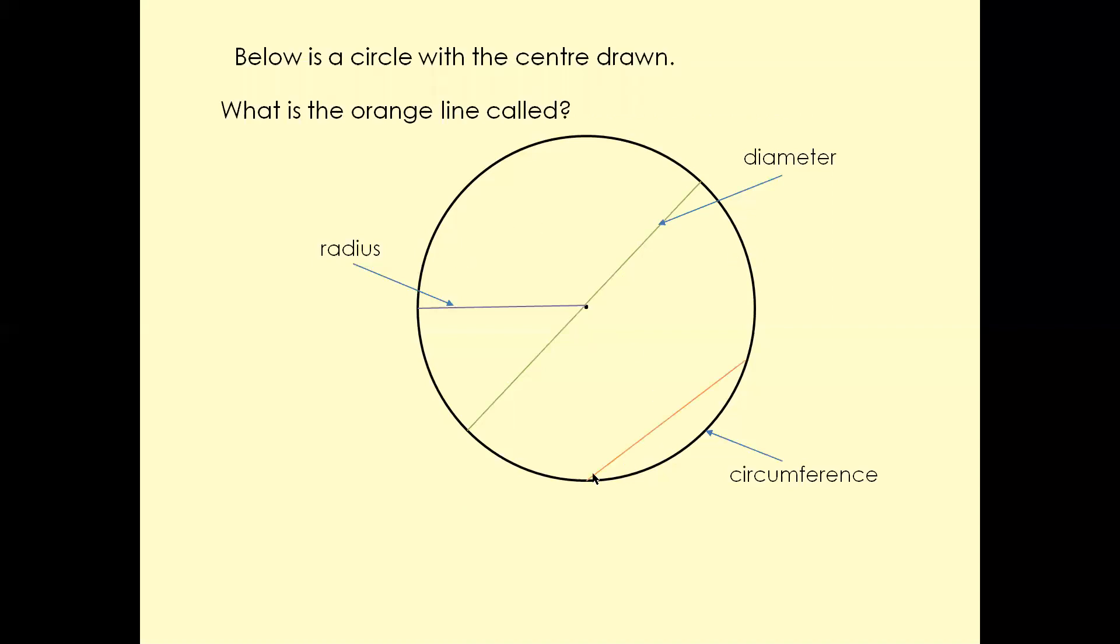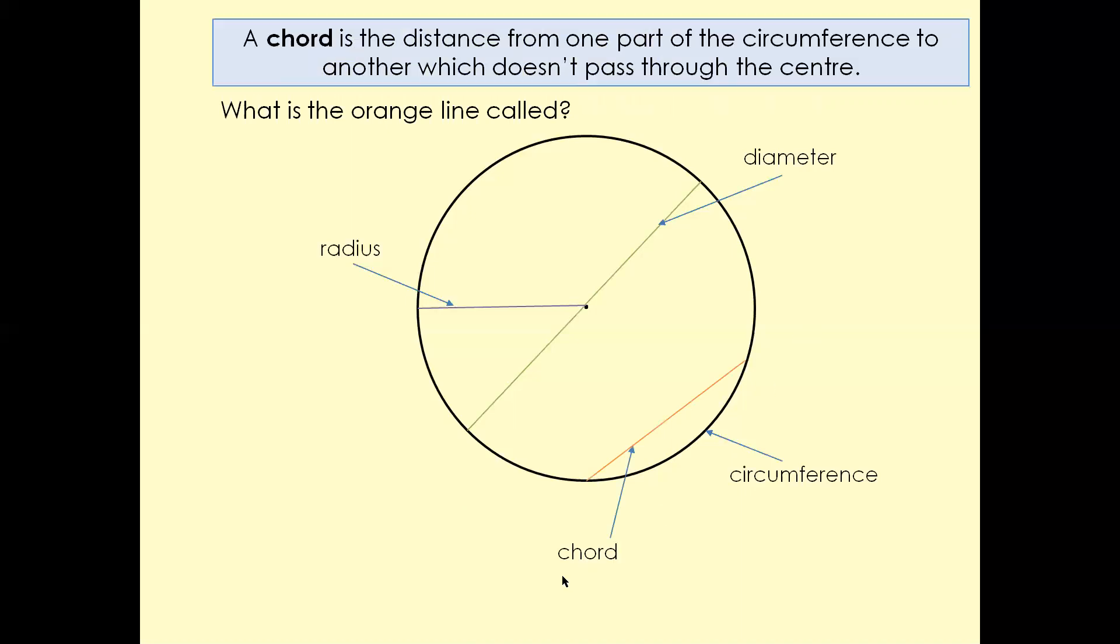What is that orange line called? That is called a chord. A chord is the distance from one part of the circumference to another that doesn't pass through the center.